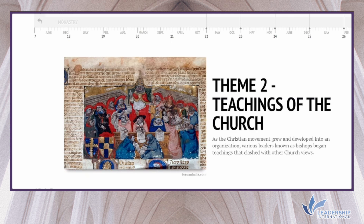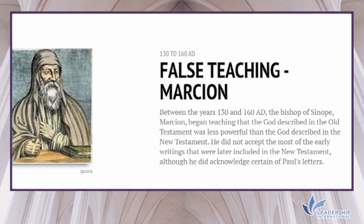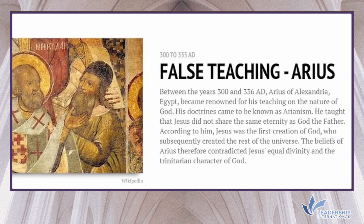Theme 2: Teachings of the Church. As the Christian movement grew into an organization, various leaders known as bishops began teachings that clashed with other views of the church. Between 113 and 160 AD, the Bishop of Sinope, Marcion, taught that the God described in the Old Testament was less powerful than the God of the New Testament. He did not accept most early writings later included in the New Testament, though he did acknowledge certain letters of Paul. During 300 to 336 AD, Arius of Alexandria, Egypt, became renowned for his teachings on the nature of God, a doctrine known as Arianism. He taught that Jesus did not share the same eternity as God the Father but was the first creation of God.